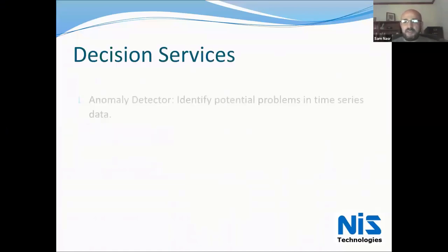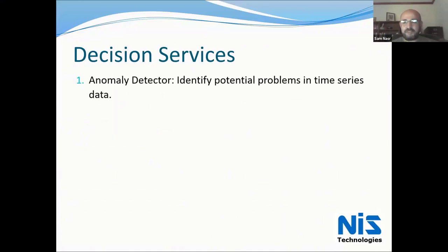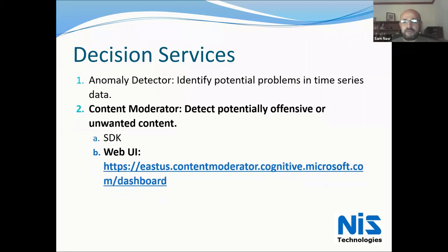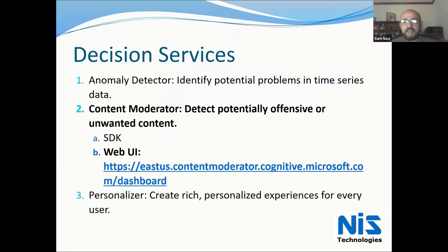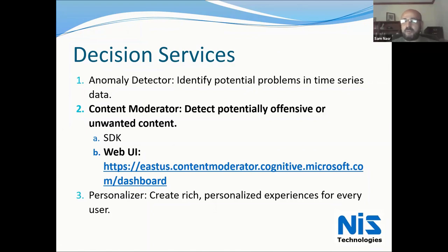The next service is Decision Services, which contains multiple subservices. There's the Anomaly Detector, which identifies problems in a time series of data. There's the Content Moderator, which detects potentially offensive or unwanted content in a message or submission — accessible through either the SDK or a web UI. And there's the Personalizer, which identifies items pertinent to your personal experience — for example, if you're shopping for lumber, it may suggest nails to go along with it.